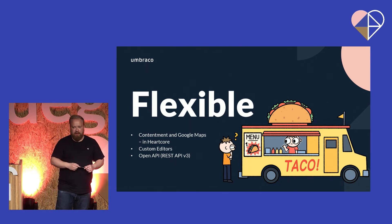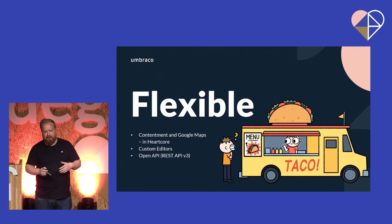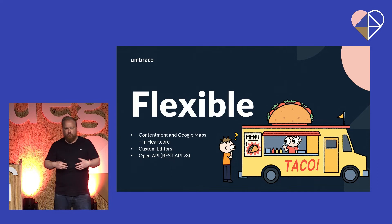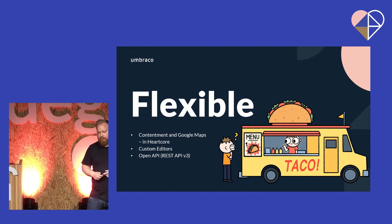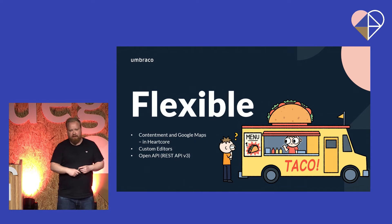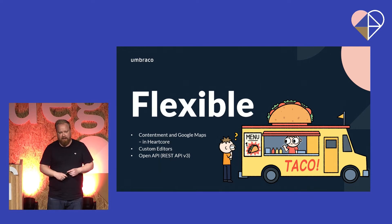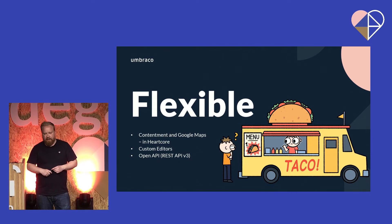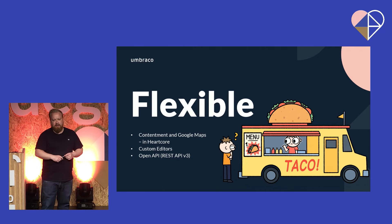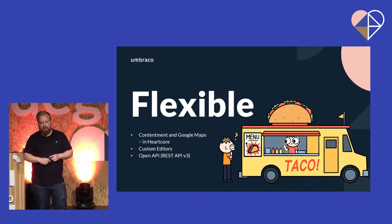In terms of flexibility, over the past couple of months we've added some additional property editors. With Heartcore when we started, we only had the property editors that you get with Umbraco out of the box. We know that everyone familiar with Umbraco is used to being able to create their own property editors, which we didn't have in Heartcore. So we've started adding a few more, like a Google Maps editor where you can select from a map and get it through the API — both REST and GraphQL. And then as Philip mentioned during the keynote, we added Contentment to Heartcore so you can pull in data from outside via JSON, XML, or even CSV.